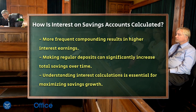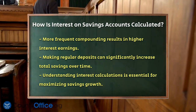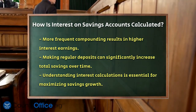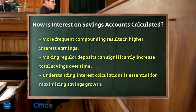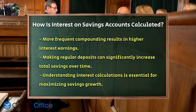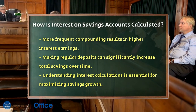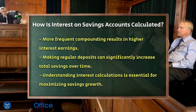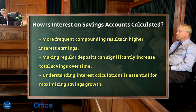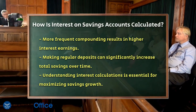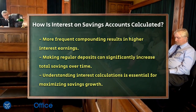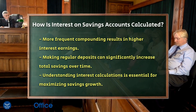To make the most of your savings, you can also make regular deposits. For instance, if you deposit an extra $100 a month into your savings account, over 5 years this can significantly boost your total savings when combined with compound interest.